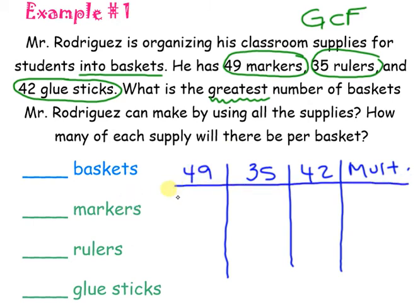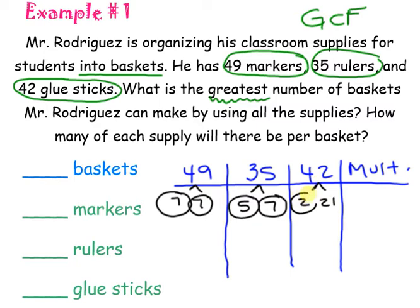So, I have 49, I have 35, and I have 42. And then remember that I need my multiply column. Just like we solve GCF every other time, I'm going to do a factor tree. So, this is going to be 7 and 7. This is going to be 5 and 7. This is going to be 2 and 21. And remember, it's okay if you break yours up differently, as long as you end up with the same prime factors. And this is going to be 3 and 7. Now, I need to find where my matches are. So, it looks like I have a 7 in each column.